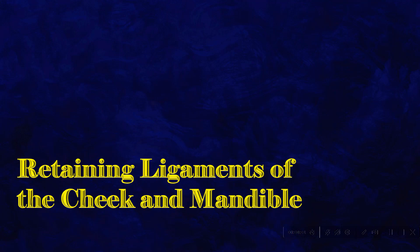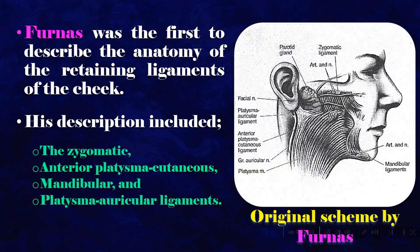Furness was the first to describe the anatomy of the retaining ligaments of the cheek. His description included the zygomatic, anterior platysma cutaneous, mandibular, and platysma auricular ligaments.